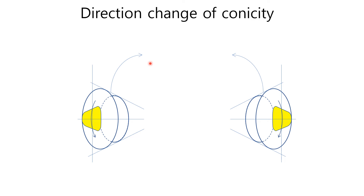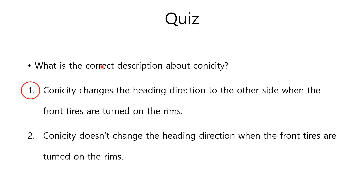You can change the direction due to conicity if you turn the tire on the rim or swap the left tire for the right one — the direction is opposite after that turning or swapping. The answer to the quiz is: conicity changes the heading direction to the other side when the front tires are turned on the rims.